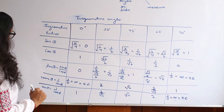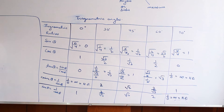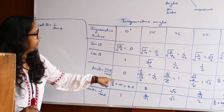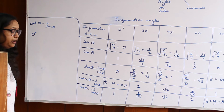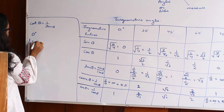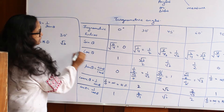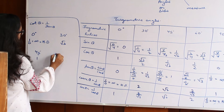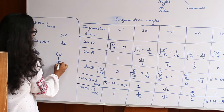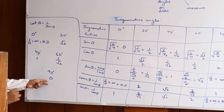Last is cotangent theta, which is the inverse of tan theta. Inverting the tan series: at 0° it is 1 over 0 — not defined; at 30° it is root 3; at 45° it is 1; at 60° it is 1 over root 3; and at 90° we get 0 over 1, which is 0.